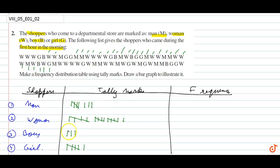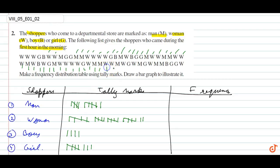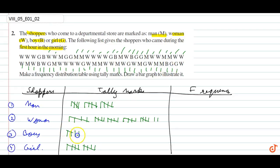Boy, Woman, Girl. Boy, Boy, Woman, Girl. Man, Woman, Woman, Woman. Man, Woman, Woman. Girl, Woman, Girl. Girl, Woman. Man, Man, Man. Man, Woman, Man. Man, Man, Man. Man, Man. Man, Man, Man. Boy, Girl, Girl. Boy, Girl, Girl. And Woman.